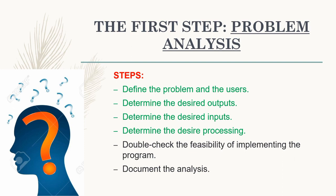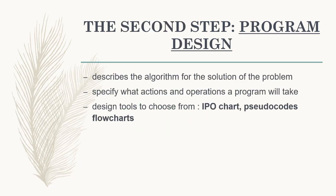We will discuss all of those in the succeeding slides. The second step in the program development process is program design. In program design, we will describe the algorithm for the solution of the problem and specify what actions and operations a program will take. For making an algorithm, we have three tools: the IPO chart, pseudo codes, and flow charts. But in this lesson, we will first discuss only the IPO chart and pseudo codes.